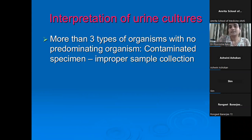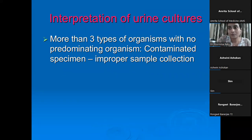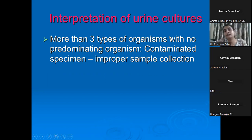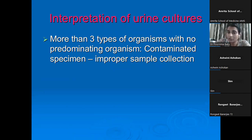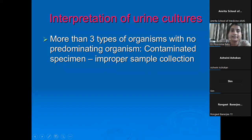Another thing commonly seen is growth of more than three organisms. If it is E. coli alone or E. coli and Klebsiella — two organisms — we do report it. But if there are more than three organisms, it will be difficult to isolate them, and we will not proceed further. We will give the comment that it is a contaminated specimen, which has happened because of improper sample collection. In that case, please instruct the patient to collect the midstream urine sample properly and resend the sample.